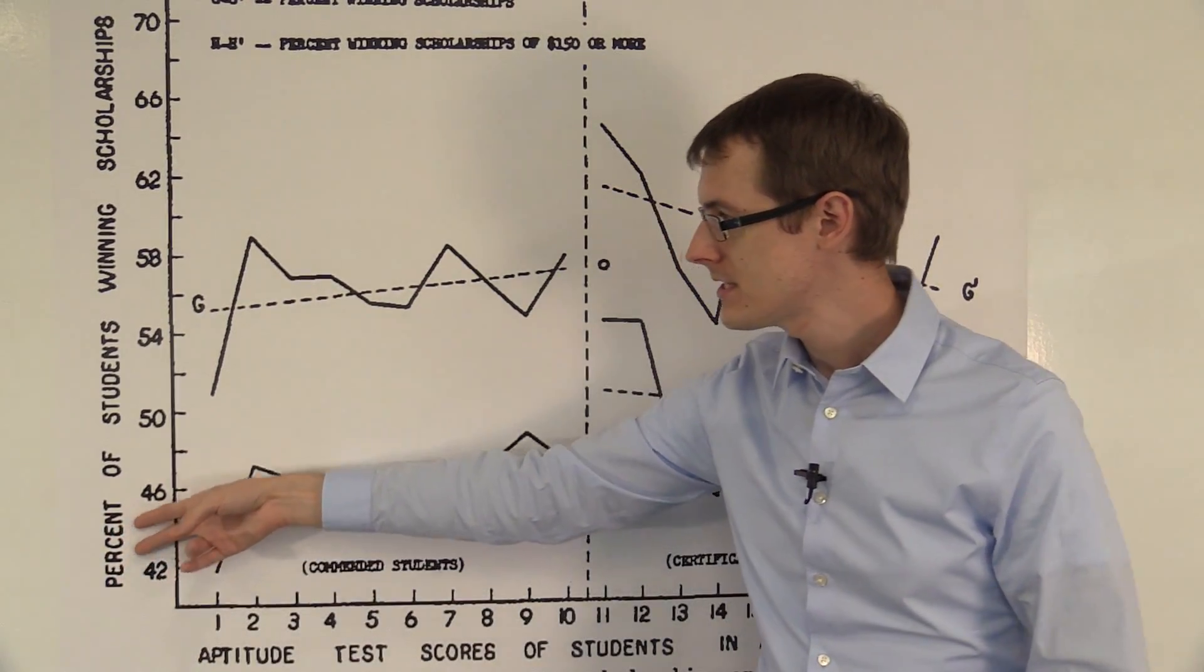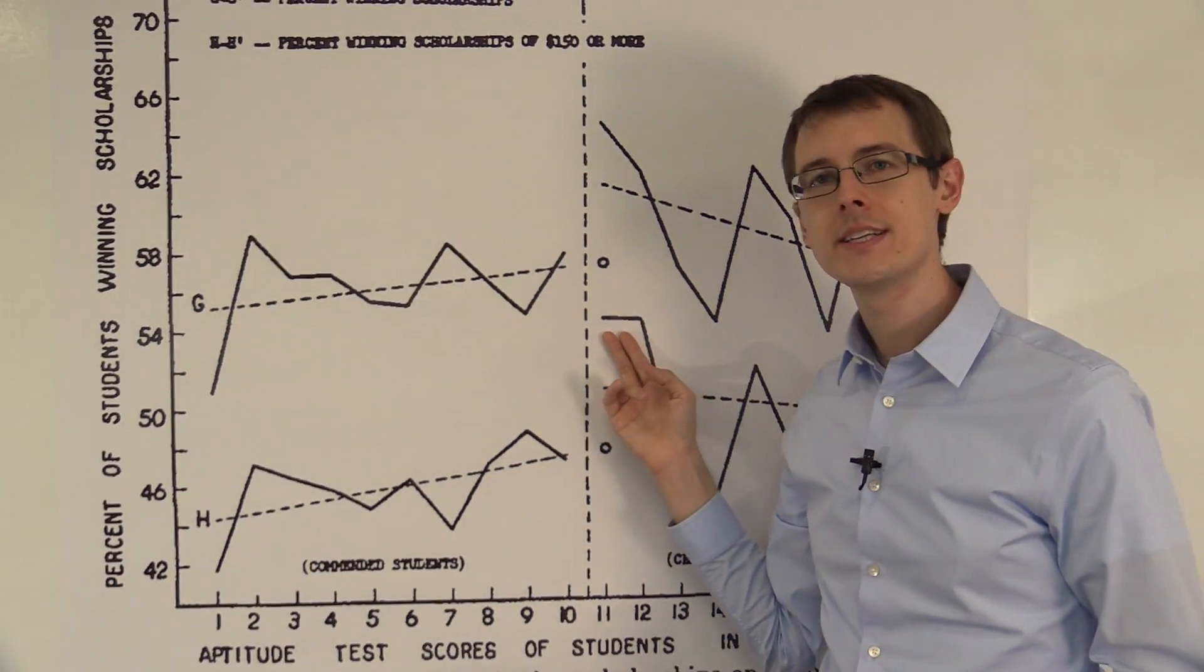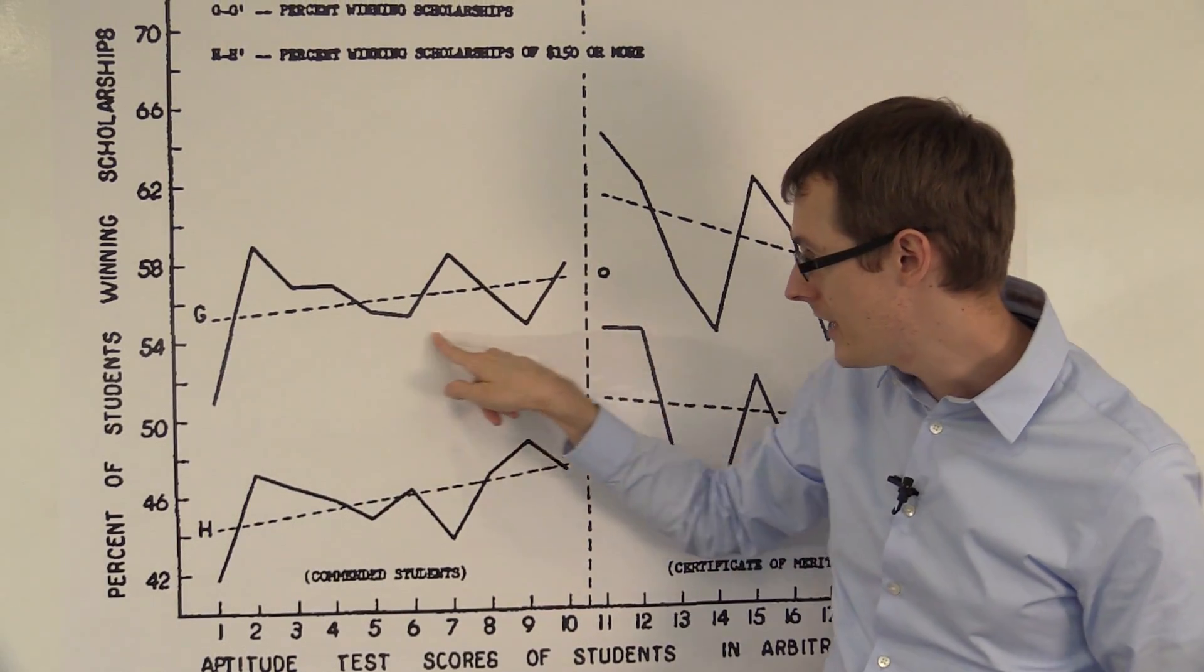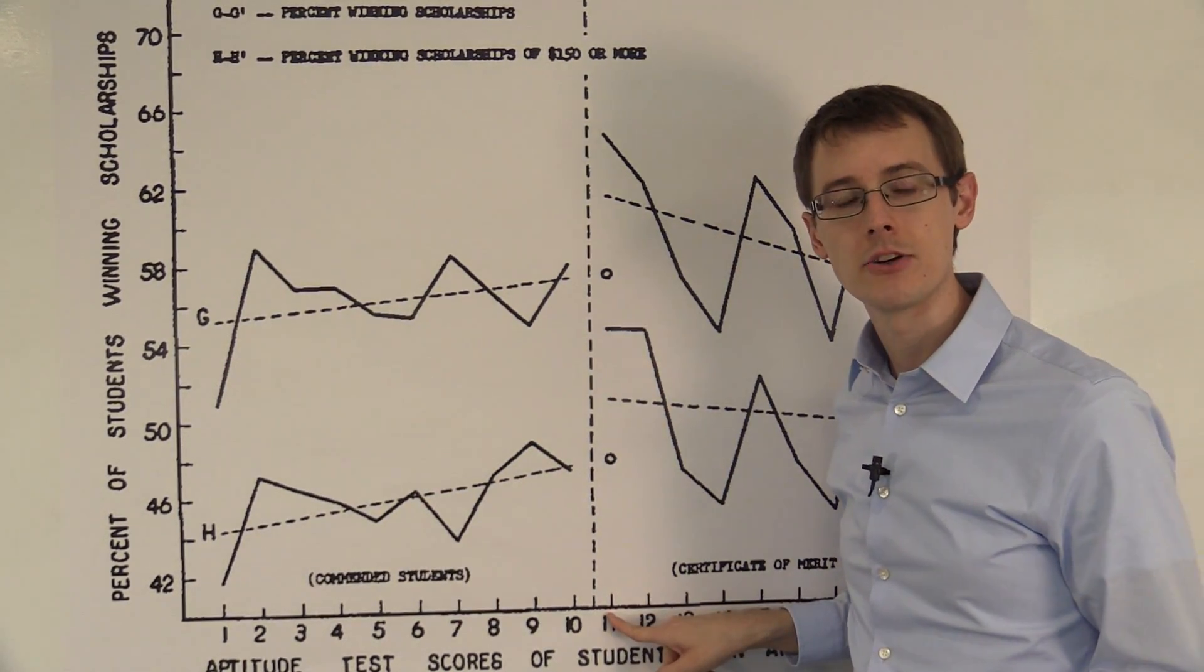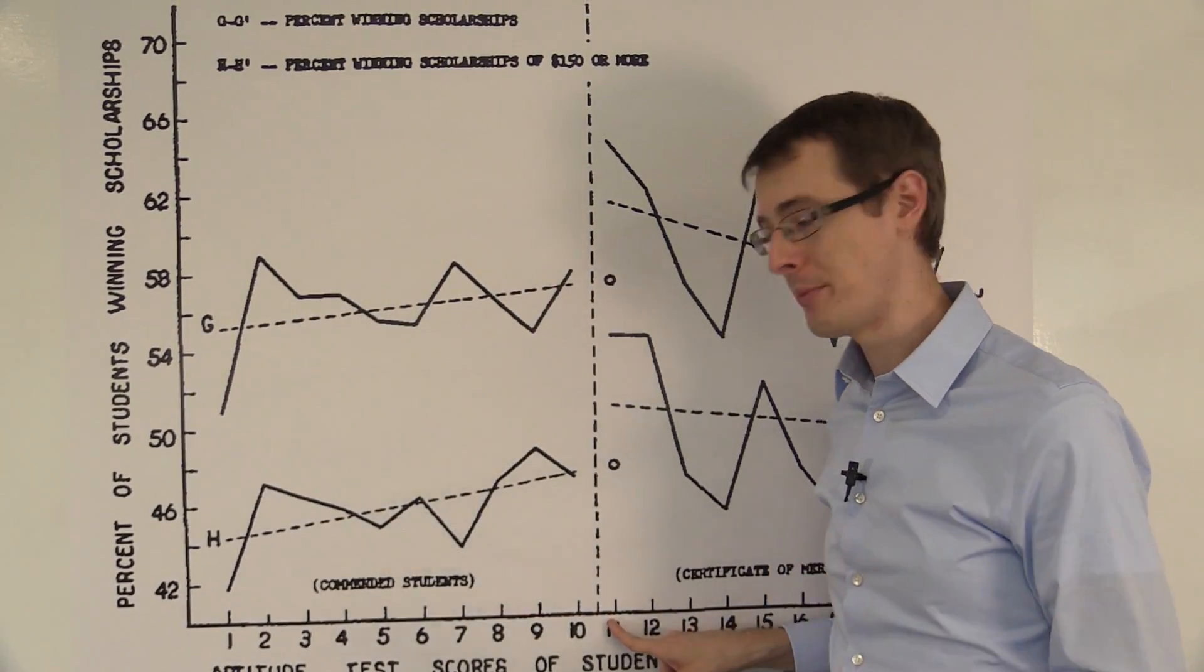So this variable on the vertical axis is the average outcome. That's this number right here. About 54% of students won scholarships. So that's the average outcome in the treatment group.